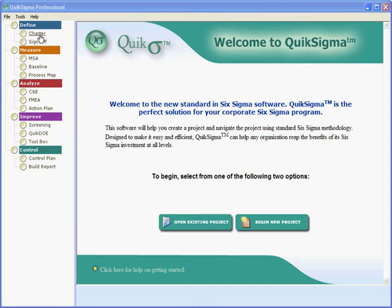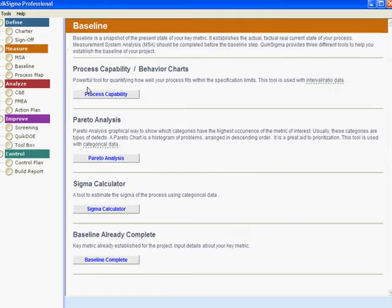In your project charter you stipulated a baseline condition as part of your key metric. Under the measure phase you'll expand that in one or more of the three tools that are provided here.